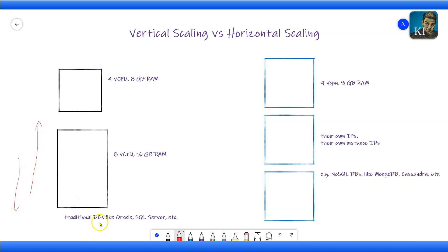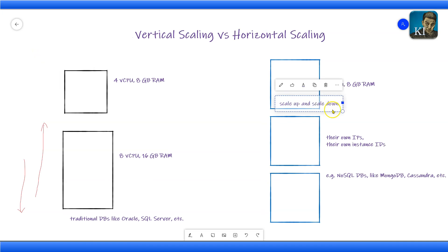The terminology used here is scale up and scale down. Scale up means adding more configuration or more infrastructure on that machine, and scale down means removing the infrastructure from your machine.